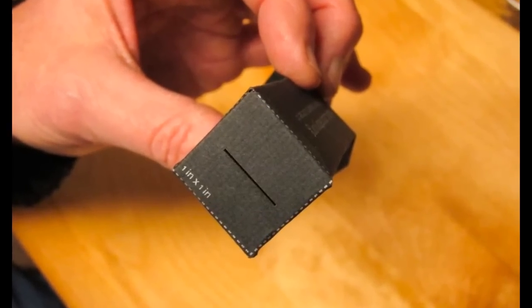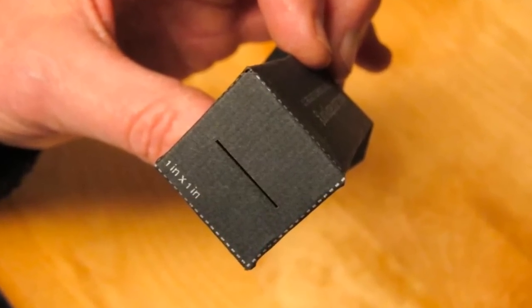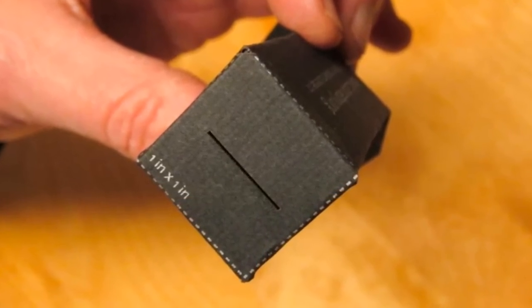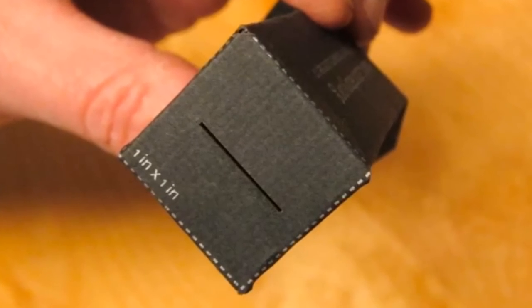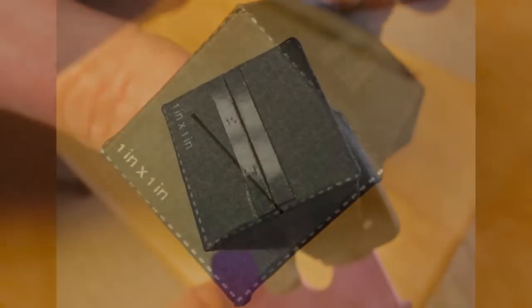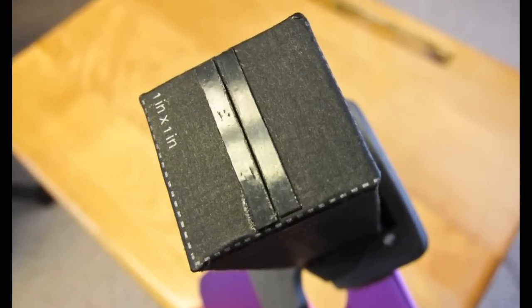Another modification I did was to make the entrance slit narrower. The standard slit works fine, but as long as the light source is bright enough, a narrower slit can resolve spectral peaks better, and I wanted to find out how much difference this made.